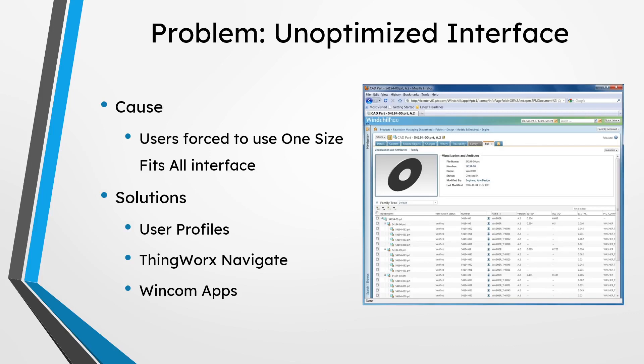There are a few different ways you can do this. One way is by using user profiles inside of Windchill to turn off certain parts of the interface based on what people need. Also, there are some great apps as part of ThingWorx Navigate, which have a nice simple interface for users to pull up — especially for those people who are not going to be in Windchill that often. The apps are tailored towards specific tasks, like pulling up a drawing package or a product structure. In addition, WinCom makes apps targeted towards specific actions based on roles inside of Windchill.